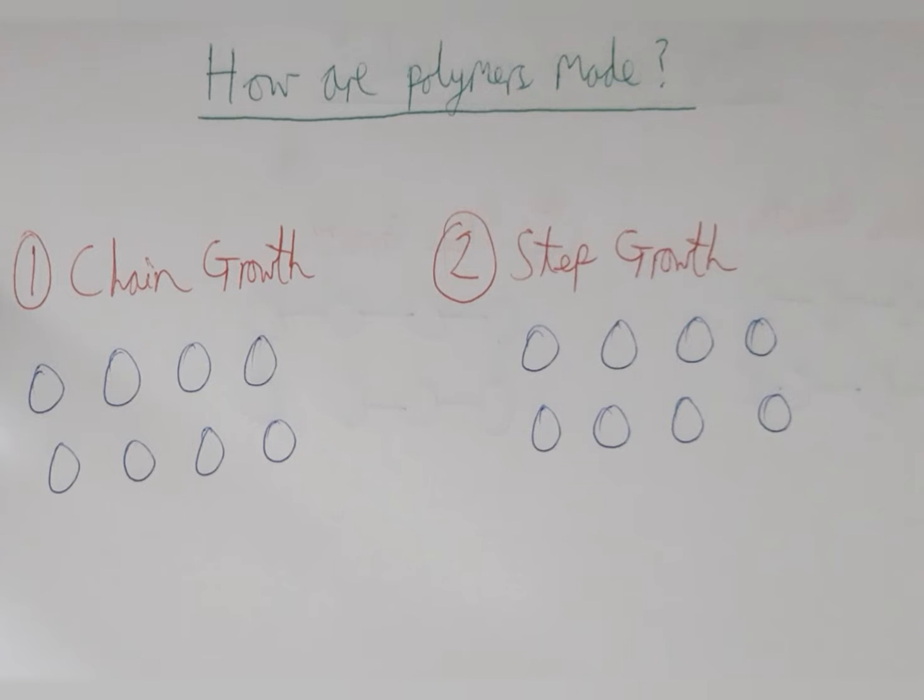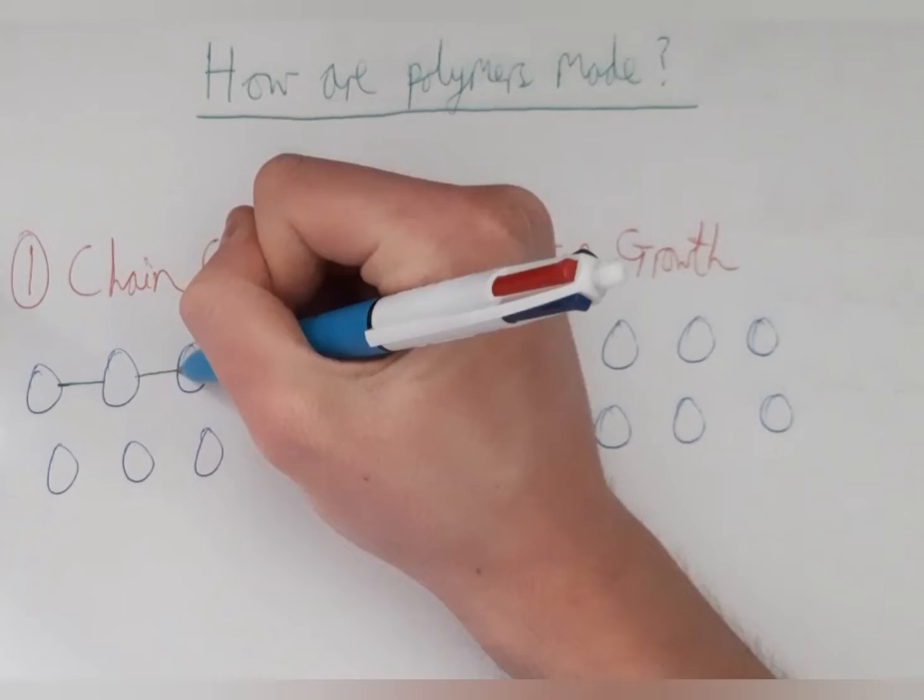Polymers are synthesized in two main ways: chain growth polymerization and step growth polymerization. In chain growth polymerization, one monomer is added to the growing chain in every step, like so.